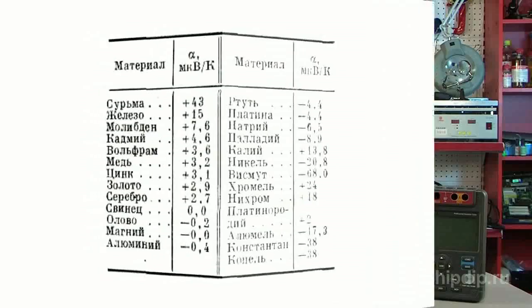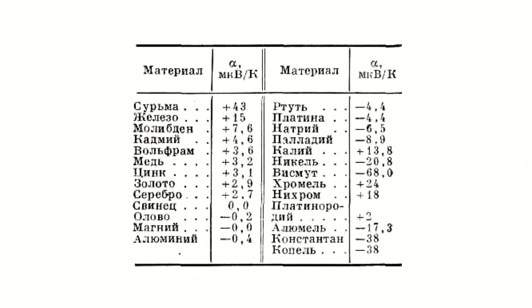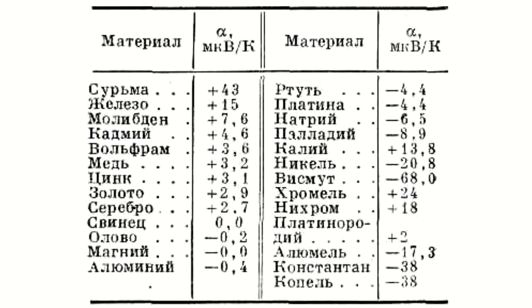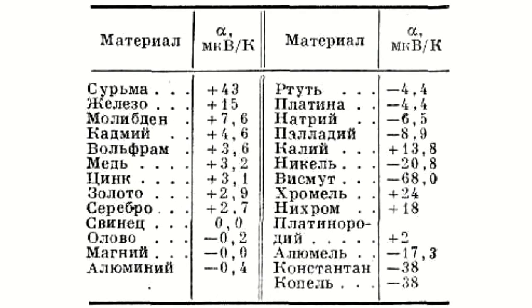The table shows the values of alpha for some metals and alloys in relation to lead for the temperature range from 0 to 100 degrees Celsius. A positive sign of alpha is assigned to those metals towards which the current flows through the hot joint.